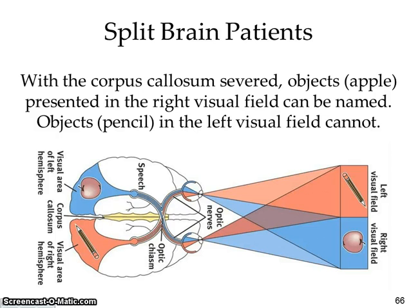When we look at split brain patients — when the corpus callosum is actually severed — objects like an apple presented on the right visual field can be named, but objects like a pencil in the left visual field cannot. We start to see a difference in the way our brains actually operate.